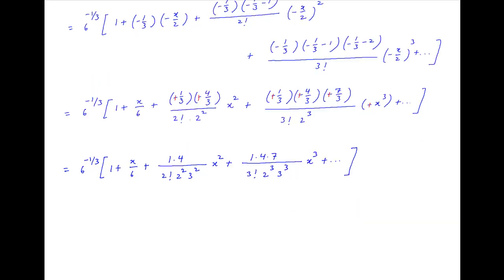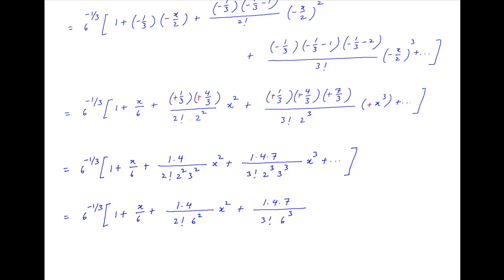This further simplifies to 6 raised to the power minus 1 upon 3, times in brackets: 1 plus x upon 6, plus 1 times 4 divided by 2 factorial times 6 squared, multiplied by x squared, plus 1 times 4 times 7 divided by 3 factorial times 6 cubed, multiplied by x cubed, plus and so on. And this is the required answer.